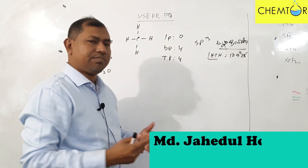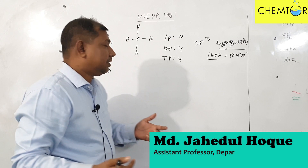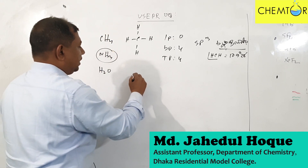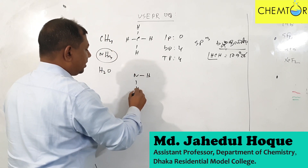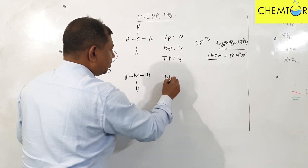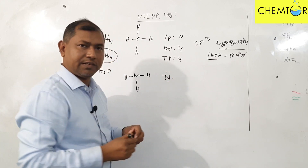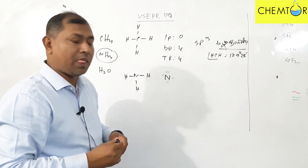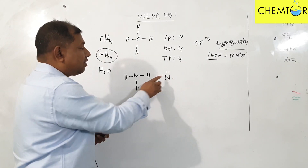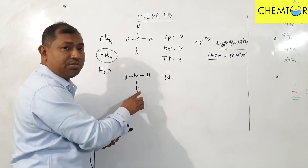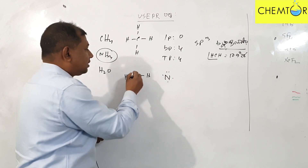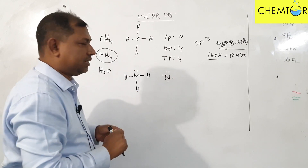Now we are going to see that there is ammonia. We have to see that ammonia is connected to nitrogen with 3 hydrogen atoms. We know that nitrogen is in group 15, so it has a lone pair, which makes it quite different.